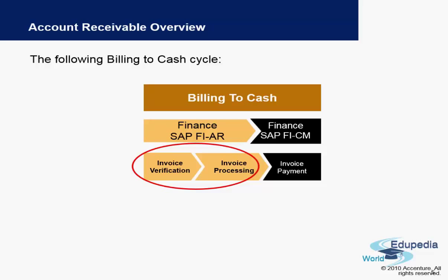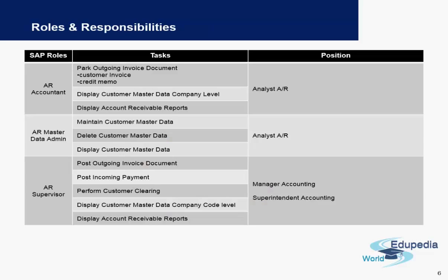The last step is for the cash management team, which is the invoice payment. Customer invoice payments are done either manually or automatically in the system. Similar to accounts payable, accounts receivable also has different kinds of roles and responsibilities within a company. You will always find that someone who posts a particular invoice is different than someone who makes the payments, or someone who parks the document is junior while someone who approves and posts is senior.